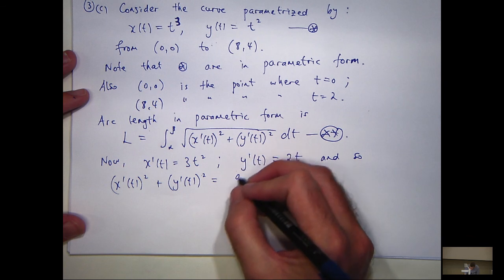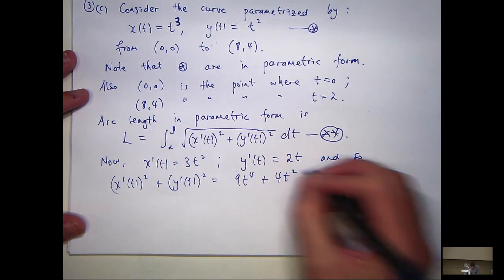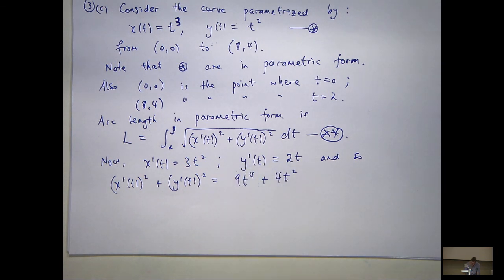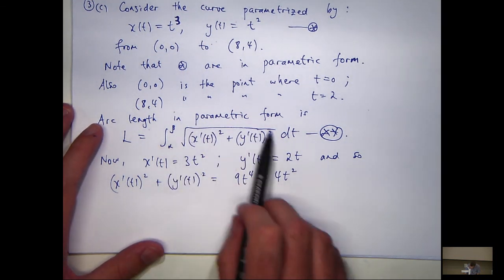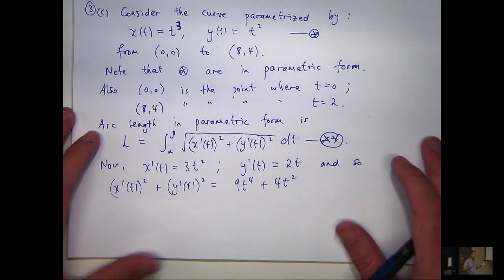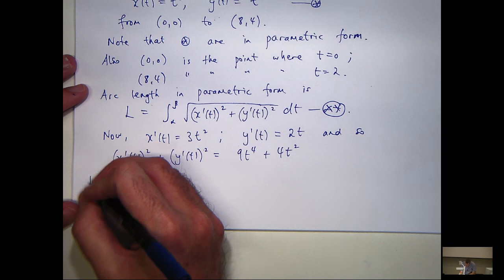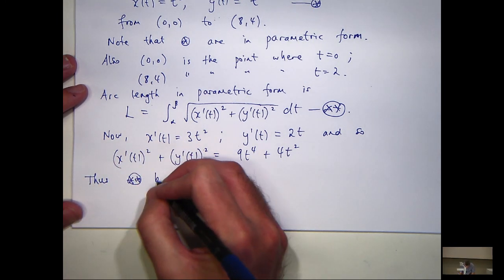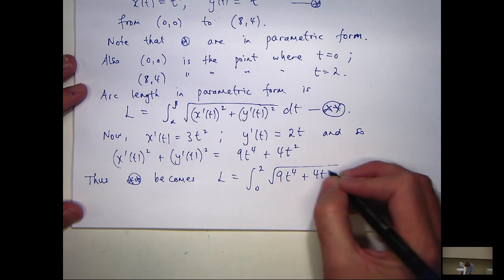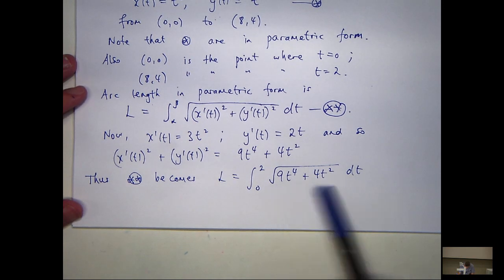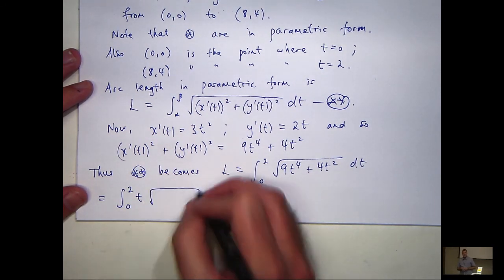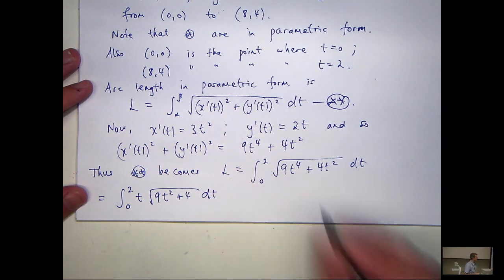Let's call this double star. We calculate x′(t) = 3t² and y′(t) = 2t. Now let's square these and add them together to see if we can manage the square root sign away. Squaring gives 9t⁴ + 4t². You can see there's a common factor of t², which is going to help us in the integral.